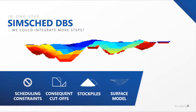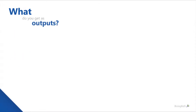With SimSched DBS, the ultimate pit limit is defined simultaneously by the optimized mine sequence of all periods, respecting mining constraints such as production limits, blending, and geometries, producing more realistic solutions. Ore and waste delineation are defined within the optimization for multiple potential routes. You can add stockpiles, and the algorithm is modeled through surfaces, which prevents approximation errors from slope angles. It can also work with simulated block models as input to optimize considering uncertainties.